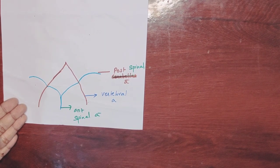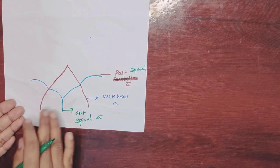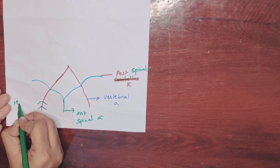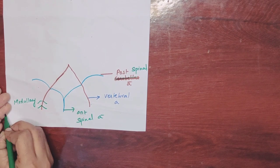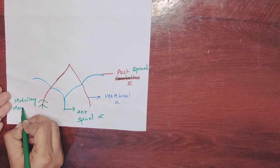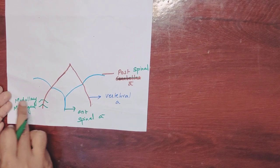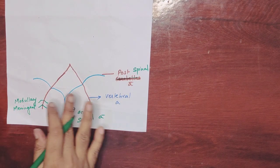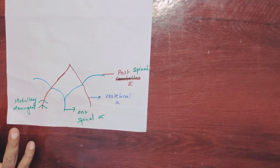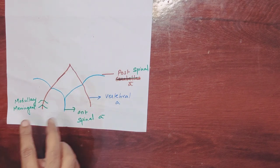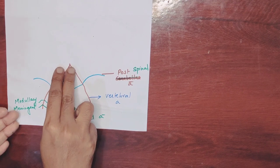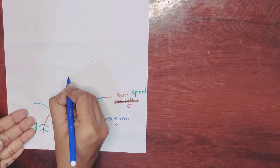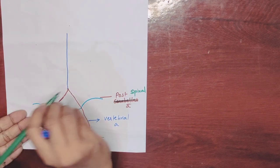In the vertebral artery, there are two important branches. One is called the medullary artery and another one is called the meningeal artery. These are the important branches of the vertebral artery. The two vertebral arteries join to form an artery which is called the basilar artery.